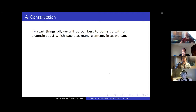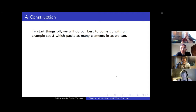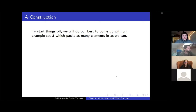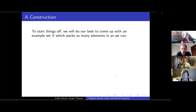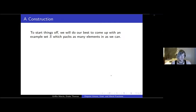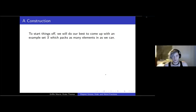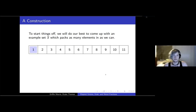We're going to start off by trying to come up with the best example set S that we possibly can. A good first way to approach a problem is to just play around with it and see what numbers fall out. We start with the best number we can include, which is one. Inclusion of one in the set means we can't have two or three, so we cross those out.